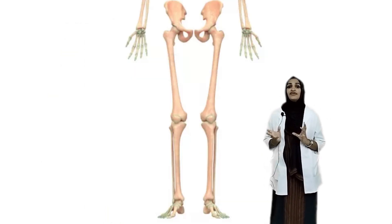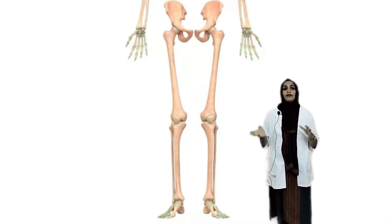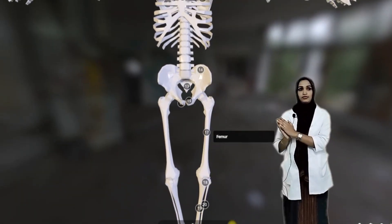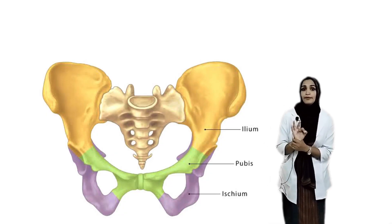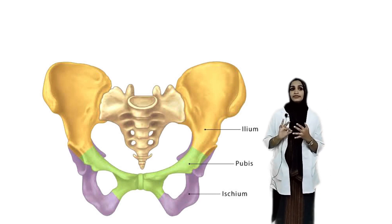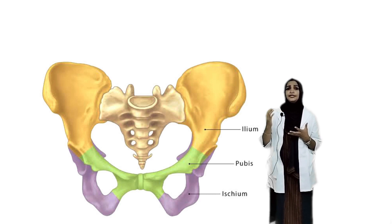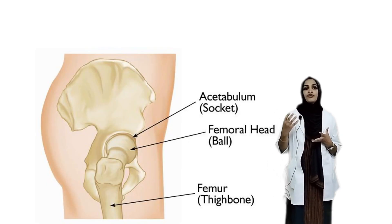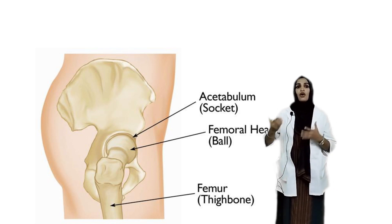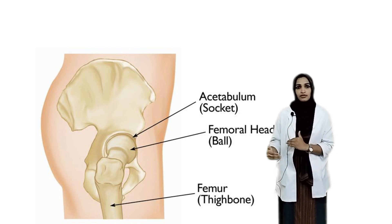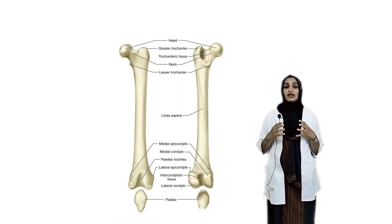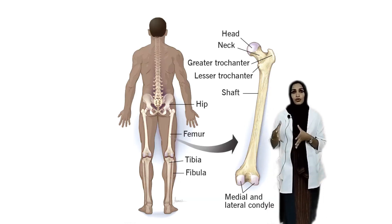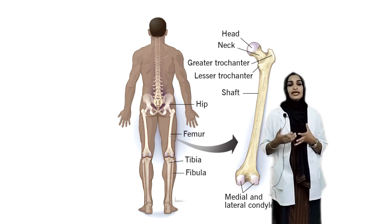Coming to the pelvic girdle and the lower limb. The pelvic girdle is formed by two hip bones. Each hip bone is made up of three united bones: the ilium, ischium and pubis. There is a deep depression known as the acetabulum, which forms a joint with the spherical head of the femur. The femur is also known as the thigh bone — it is the longest and heaviest bone in the body. The femur transmits the weight of the body through the bones below the knee to the foot.